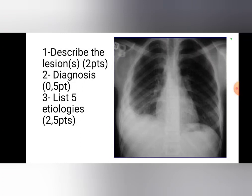We have already covered chest X-ray examination on our YouTube channel, so I'm going to go directly to specific abnormalities. When you are asked to describe a chest X-ray for pathologies, you try to visualize using the ABCD mnemonic. A is for airway — you visualize if there is any shift or deviation of the trachea.